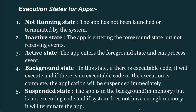Execution states for apps: 1. Not Running — the app has not been launched or has been terminated by the system. 2. Inactive — the app is entering the background state but not receiving events. 3. Active — the app enters the foreground state and can process events. 4. Background — if there is executable code it will execute; if there is no executable code or execution is complete, the application will be suspended immediately. 5. Suspended — the app is in the background in memory but is not executing code. If the system does not have enough memory, it will terminate the app.